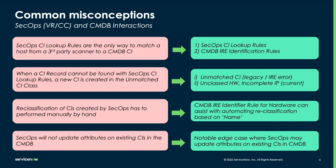The unmatched CI class is still used if IRE encounters an error condition while trying to create a CI. But primarily, there are two new classes: unclassed hardware and incomplete IP. The third misconception is that reclassification of CIs created by SecOps has to be performed by hand. In fact, when the real CI comes into the CMDB at a future point, there is a way that reclassification can be automated. The fourth misconception is that SecOps will not update attributes on existing CIs in the CMDB. There is a notable edge case where SecOps may update attributes such as the IP address or operating system on an existing CI. We'll dive deeper into these misconceptions in our scenario walkthroughs.